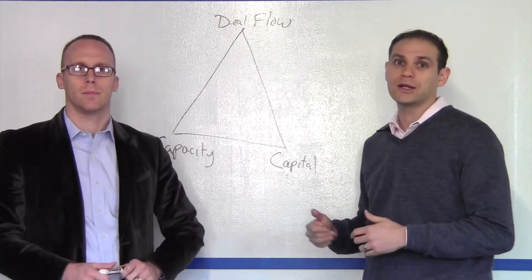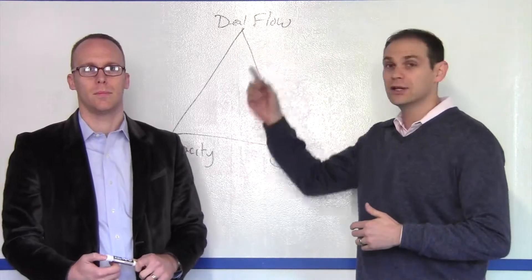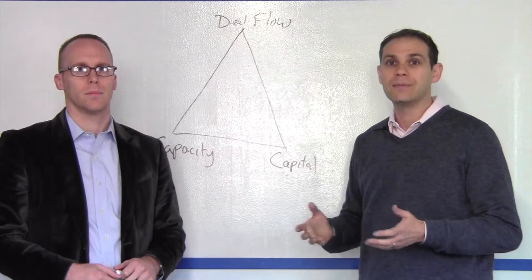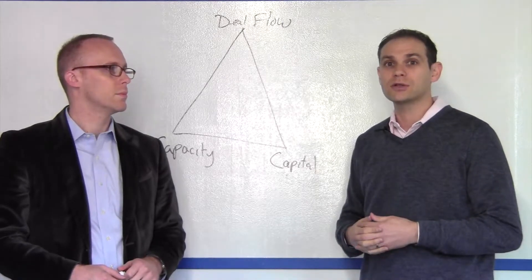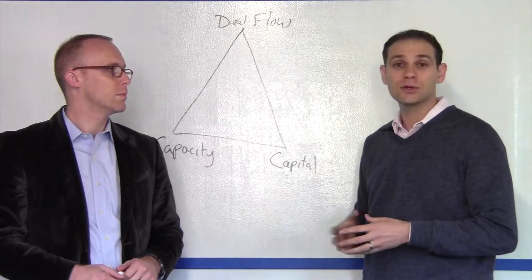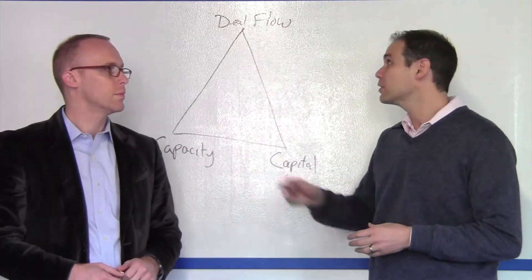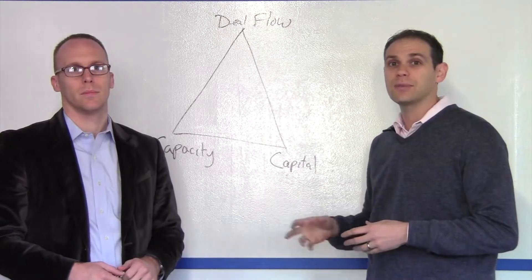Capital is pretty black and white as long as you're finding good deals and your team can manage them. But really, without one part of the triangle, things don't work and they fall apart. So for a successful real estate business, you need to have all three things covered: deal flow, capacity, as well as the capital.